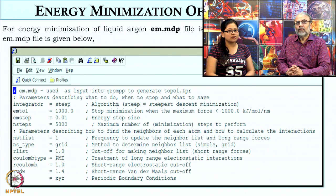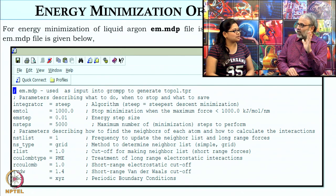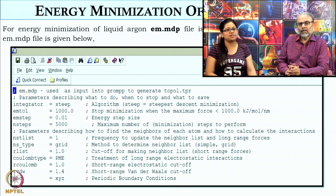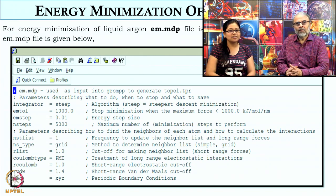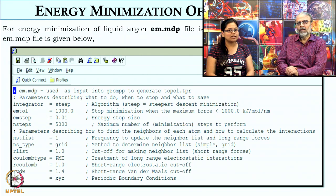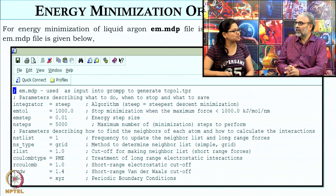For the full MD simulation we will also need an MDP file, which is an even bigger file with additional parameters. In the EM.MDP file, the first line is integrator equals steep — that is the steepest descent algorithm for energy minimization. There is also the L-FBGS algorithm and other options, but for simple monoatomic molecules, steepest descent is sufficient. Steepest descent means you come fastest from a high energy level to the lowest energy.